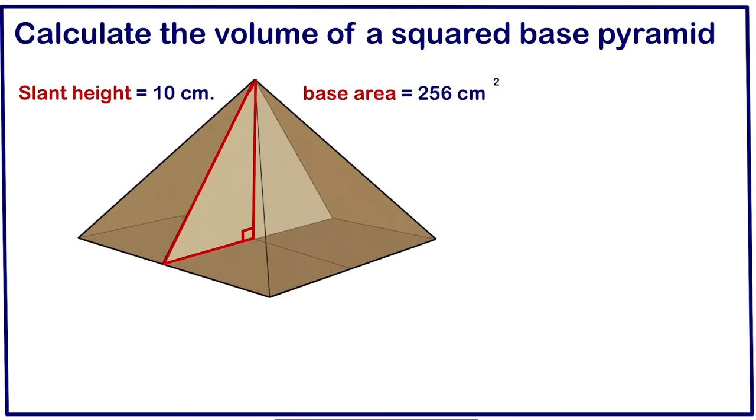The first thing to do is to write the formula of volume so that we should know what is needed for us to calculate the volume. When asked to calculate volume, it's always preferable to start by writing the formula. So volume equals one-third the base area times the height.